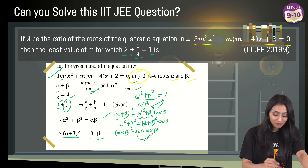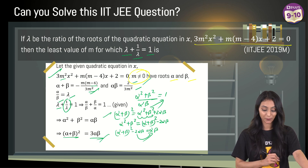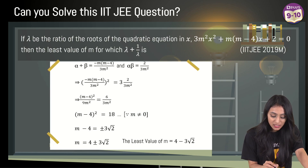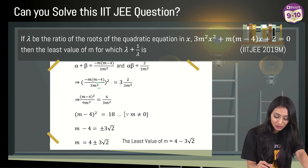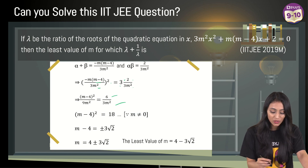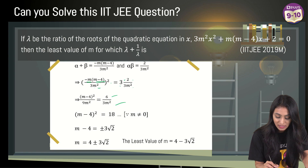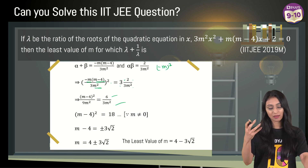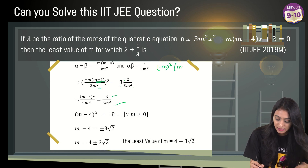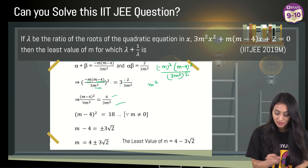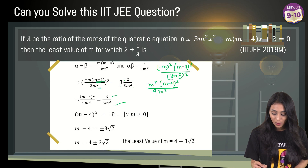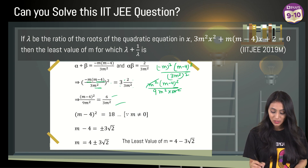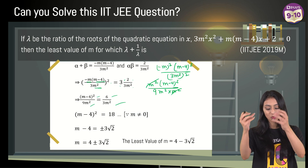Now we substitute the sum and product of zeros. We get [−m(m − 4) / 3m²]² = 3 × (2 / 3m²). The square applies to all terms: m² · (m − 4)² / 9m⁴ = 6 / 3m². The m² terms cancel, leaving (m − 4)² / 9m² = 6 / 3m², which simplifies to (m − 4)² / 9 = 2.